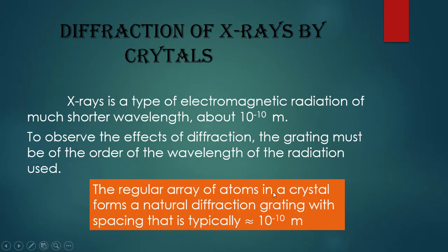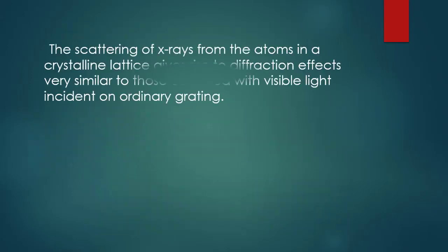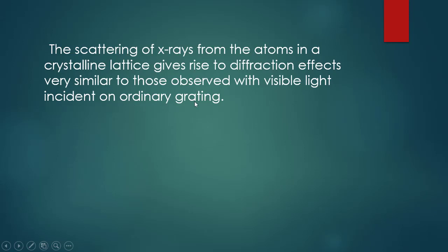The crystalline solid has a regular arrangement of atoms with spacing nearly equal to 10 to the power minus 10 meters, comparable to the wavelength of X-rays. The scattering of X-rays from atoms in a crystalline lattice gives rise to diffraction effects very similar to those observed with visible light incident on an ordinary grating.